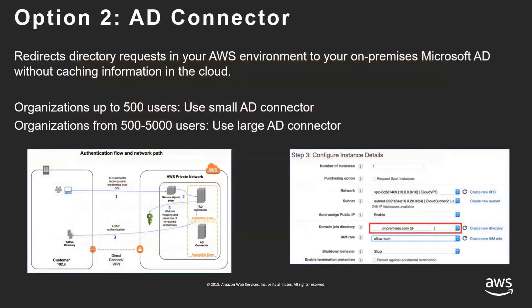The second option is AD Connector. What this does is redirect all requests that come in from AWS and pass them along to your on-premises Active Directory. This is ideal when you don't want to maintain a second forest in AWS and just want to manage one central forest on-prem. AD Connectors come in two different sizes: Small for 500 users or less, and Large for up to 5,000 users.